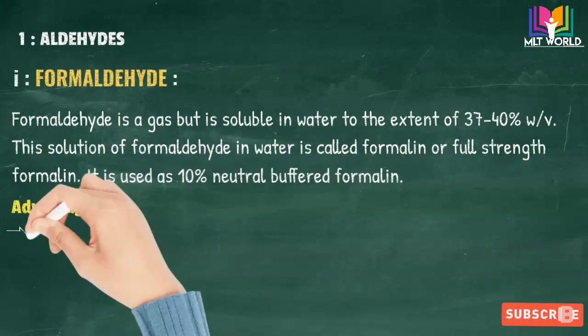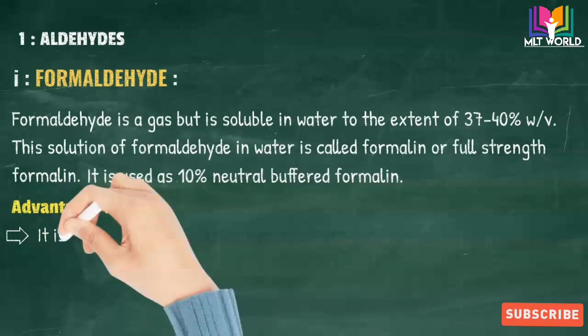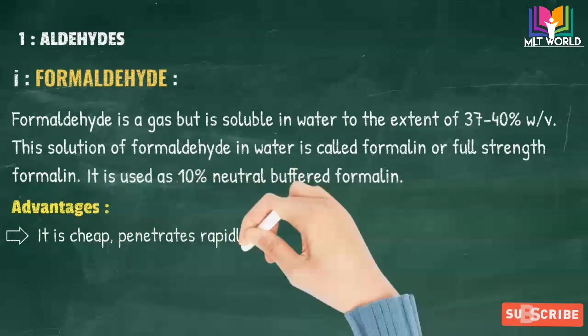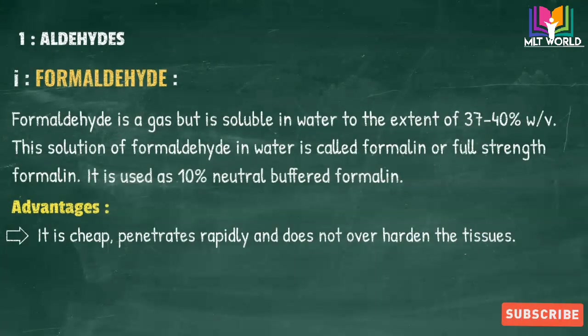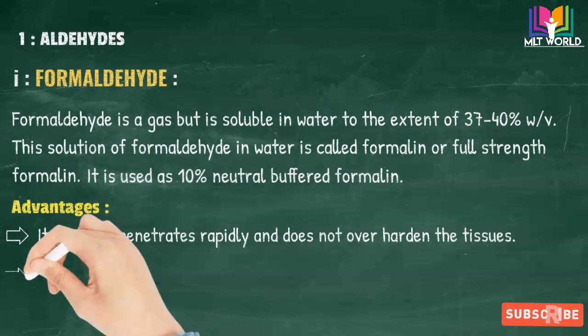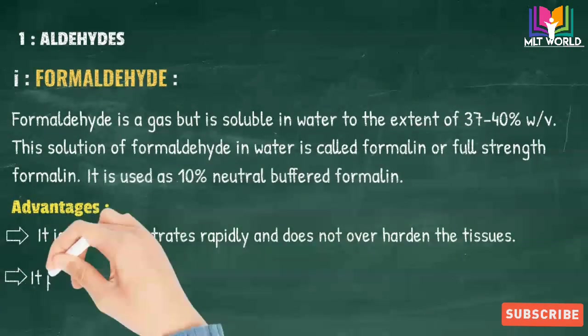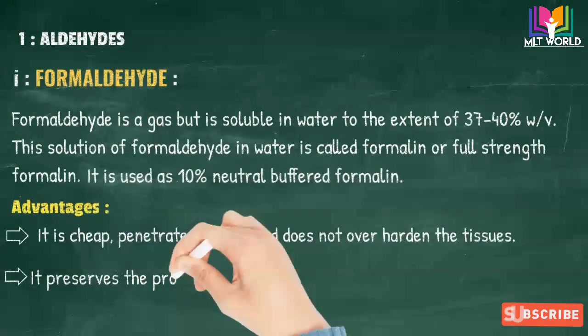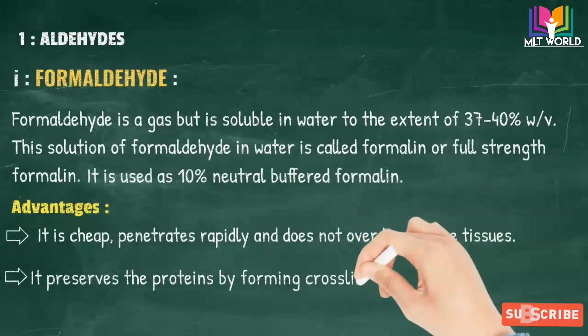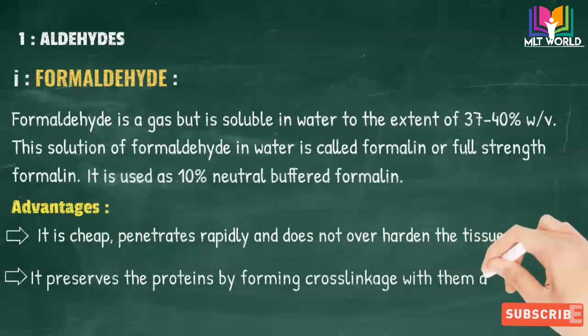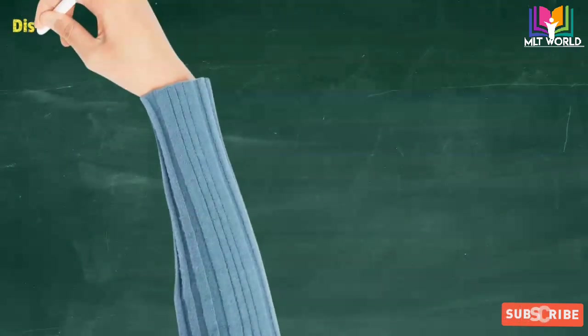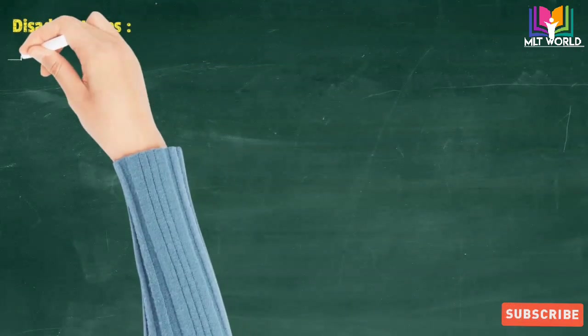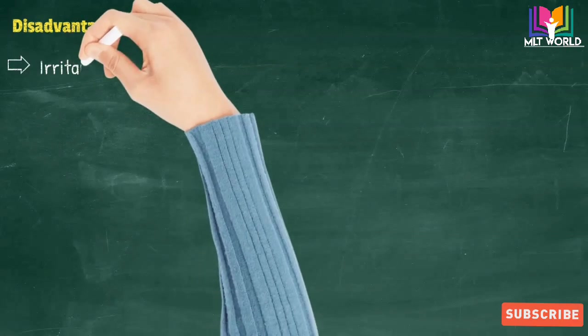Advantages: formaldehyde is cheap, penetrates rapidly, and does not over-harden the tissues. It preserves the proteins by forming cross-linkages with them and the tissue components.